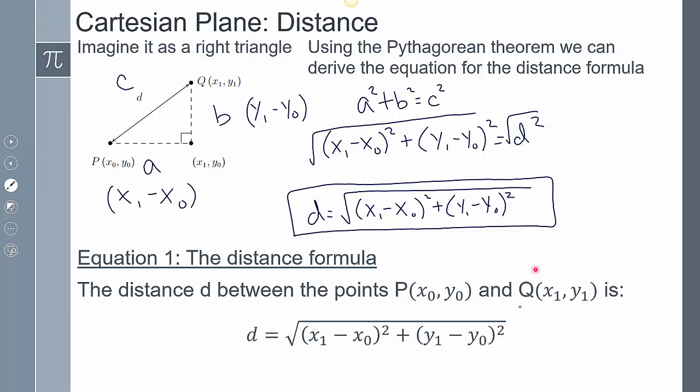The points don't have to be labeled P and Q specifically. For any two points, label them (x₀, y₀) and (x₁, y₁) — or equivalently (x₁, y₁) and (x₂, y₂) — and plug that information straight into the distance formula. It's all the same; it's just how you choose to qualify the notation.